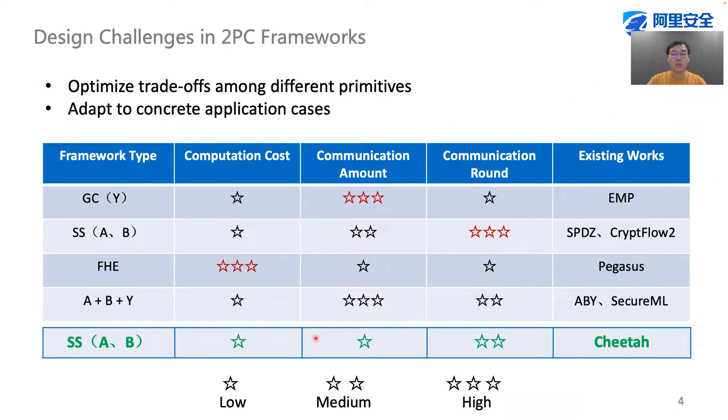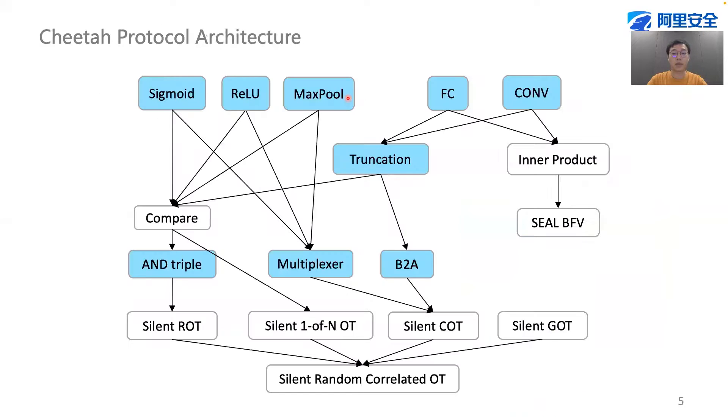There are many primitives that we can leverage to design a two-party computation framework. The philosophy in Chita is to optimize the trade-offs among different primitives and then adapt our implementation details to the application case. This is the protocol architecture in Chita. It is mainly separated into two parts.